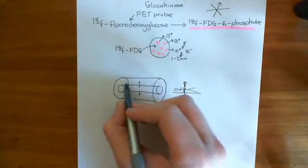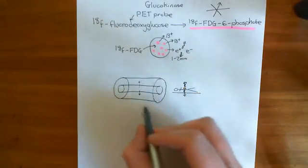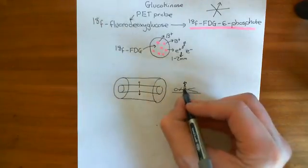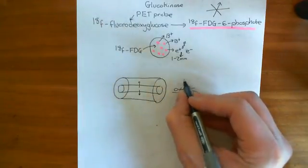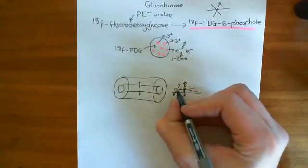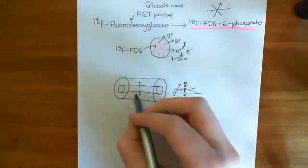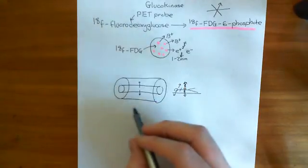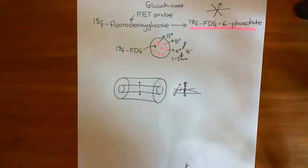So what the PET scanner then does is it detects these photons. So it will have a detector up here. It will have detectors all around because it's not necessary that the photons are going to come off vertically and this way. They could go off sideways. They could go off to the patient's left and to the patient's right, which is why the detector needs to go all the way around.